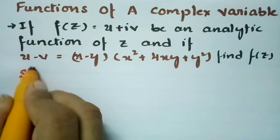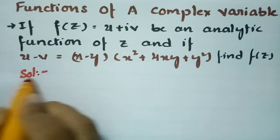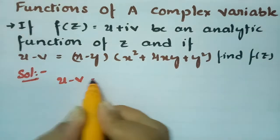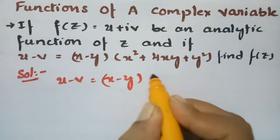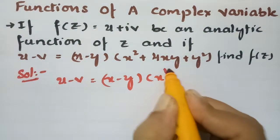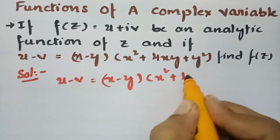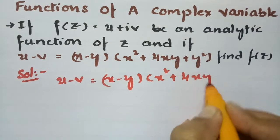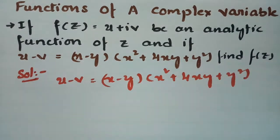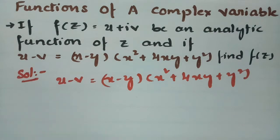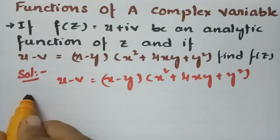In the question it is given that u minus v is equal to (x - y)(x² + 4xy + y²). Now I am going to differentiate with respect to x.